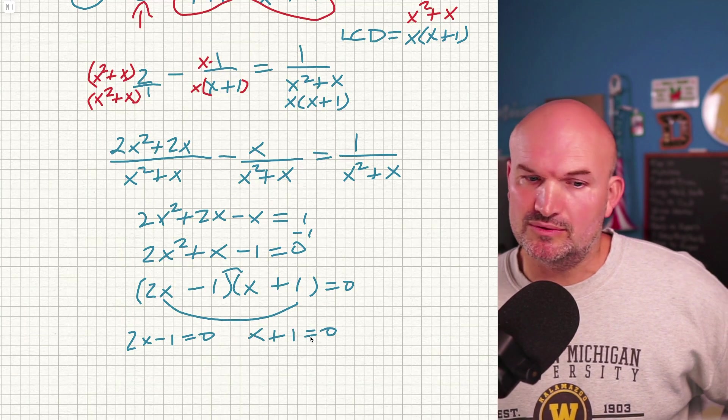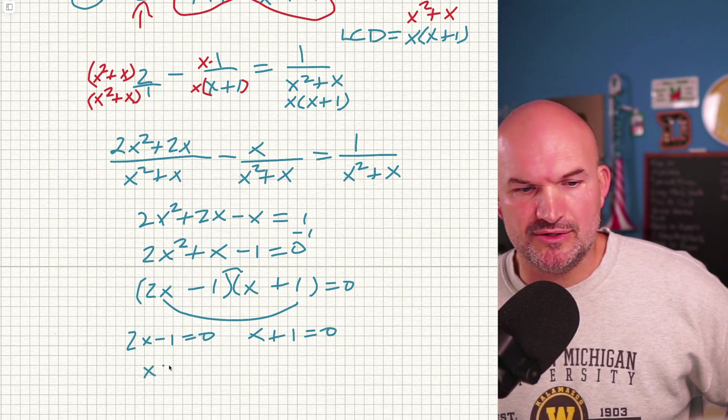Now, I didn't show the 0 product property on the last example, so let's just go and break it up. Because when you have a product equal to 0, you can apply the 0 product property, add 1, divide by 2, so X equals 1 half, and over here, X equals negative 1.